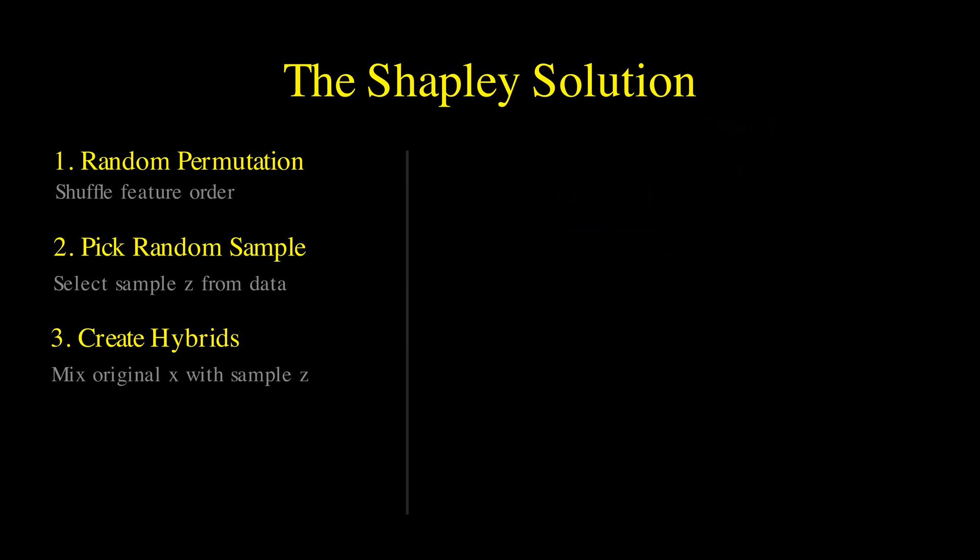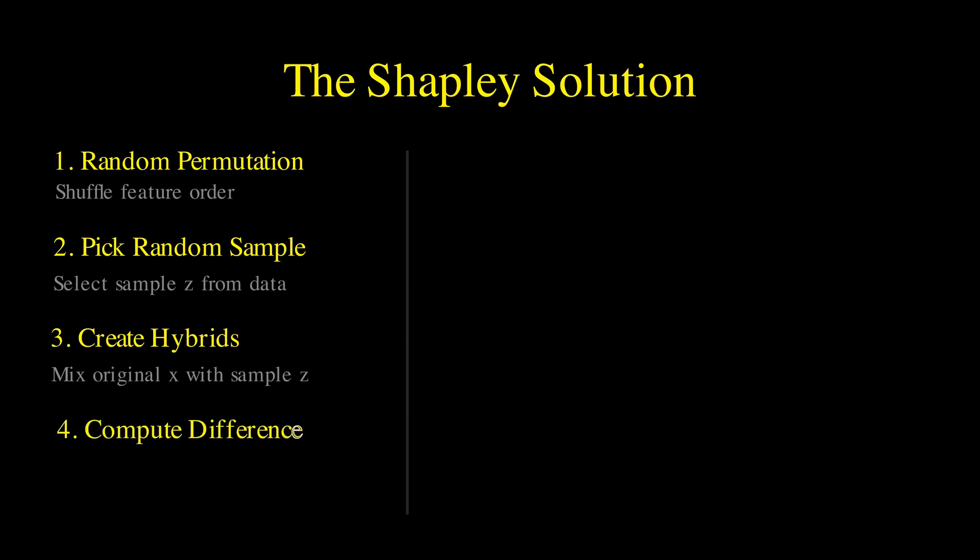Finally, in step 4, we compute the difference between these two hybrid samples to isolate the impact of our target feature. Look at the right side of the screen. We've constructed two specific scenarios using our permutation order. First, look at the without T box. For the features before temperature, day and flights, we use the values from our original Tuesday data.